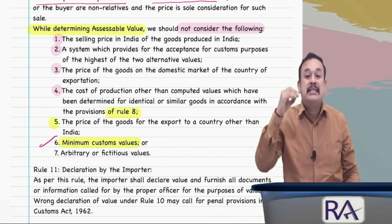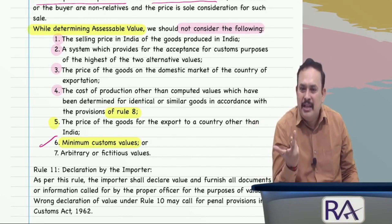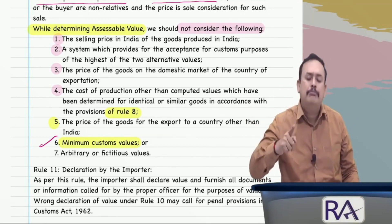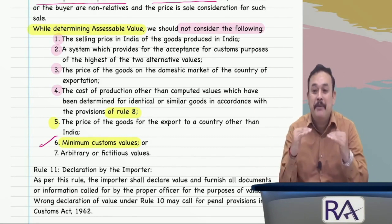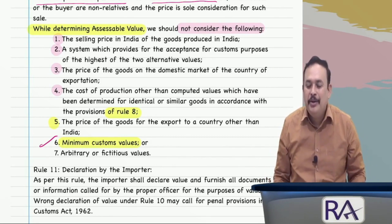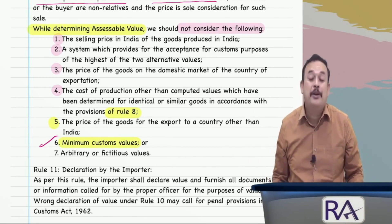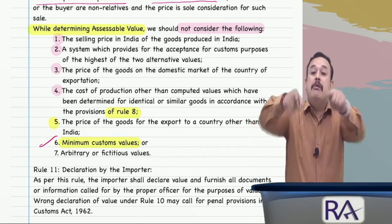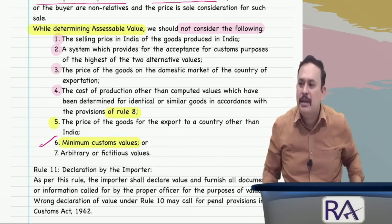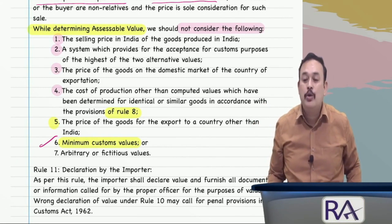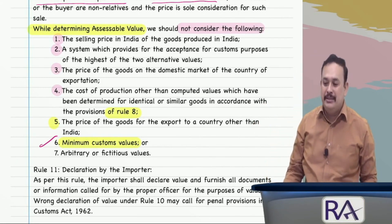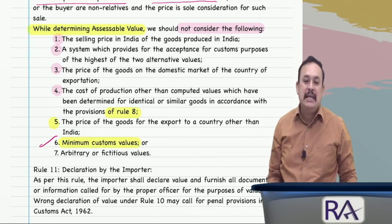The Government of India called this a restricted good — allowed to export but subject to satisfying the condition. So a minimum value of 1500 rupees per kilo of onion has been prescribed for export. Such minimum values, however, should not be considered by the customs officer while determining the value under Rule 9 — the residual method using best assessment.